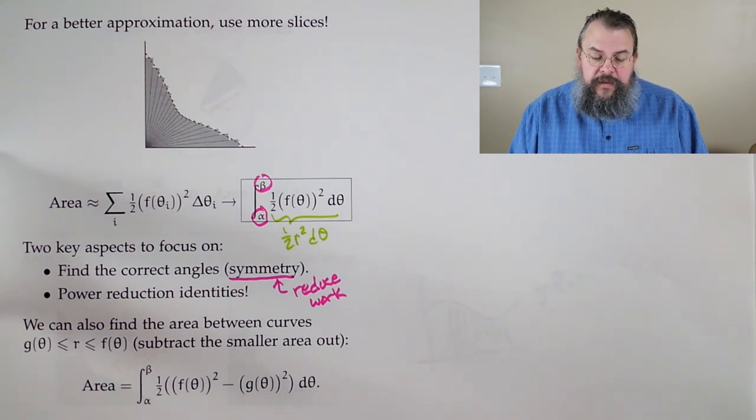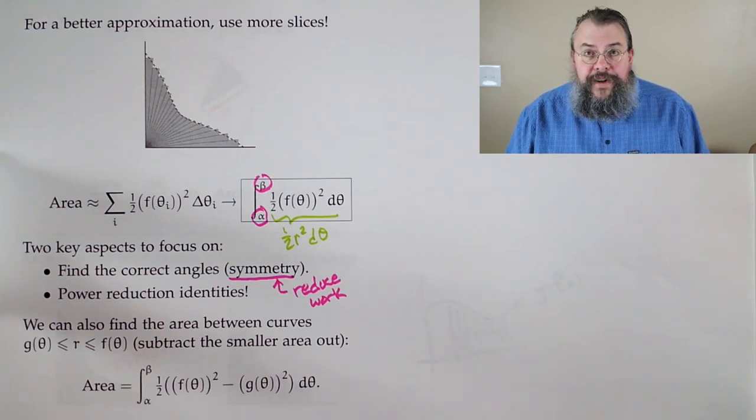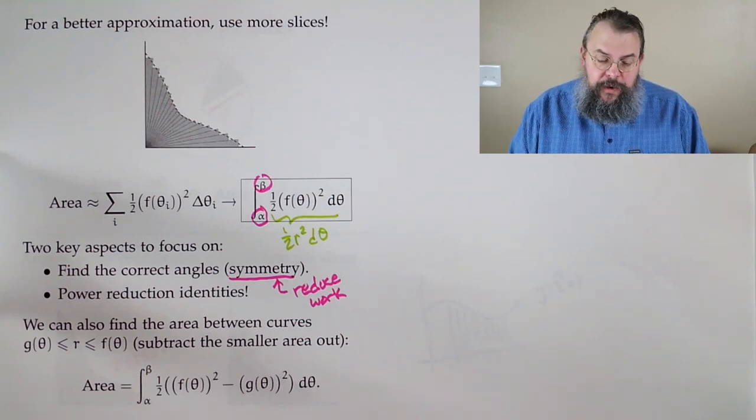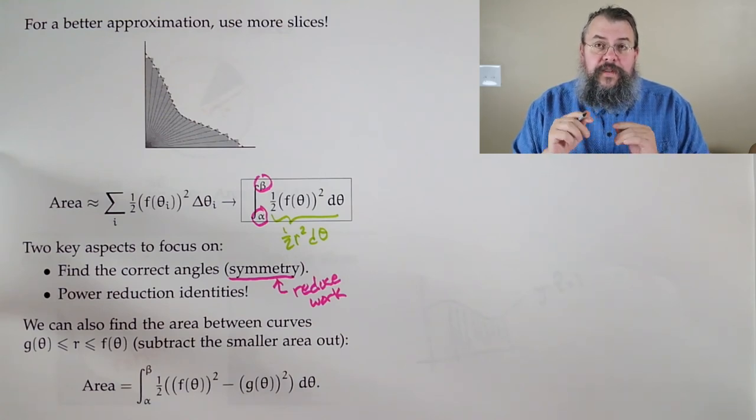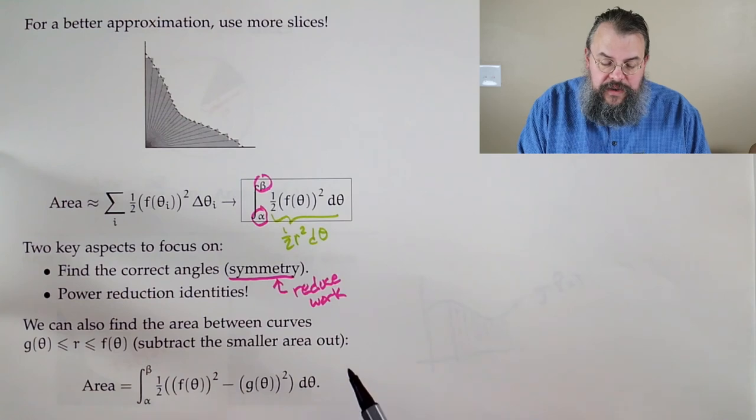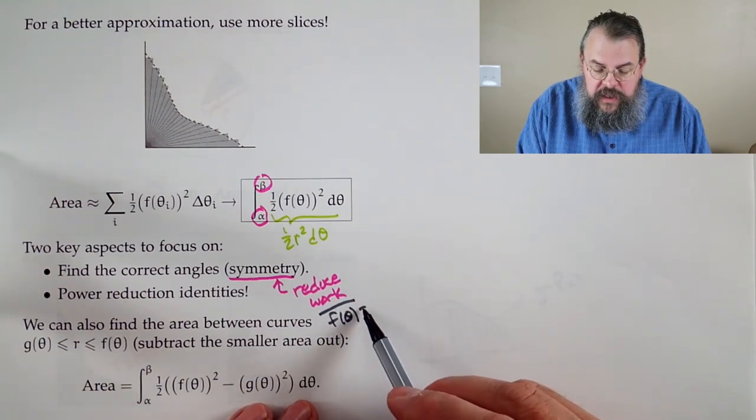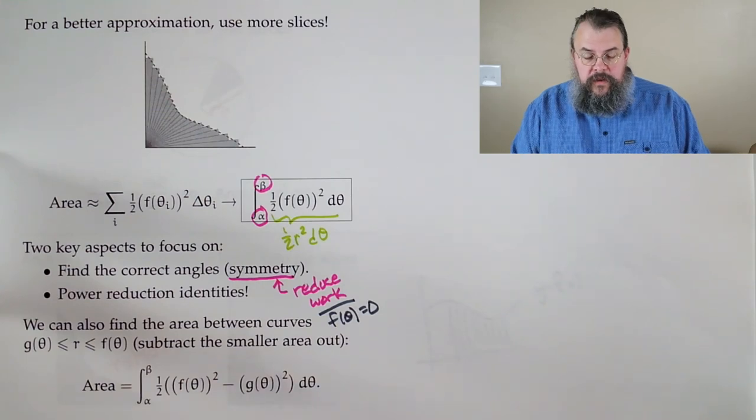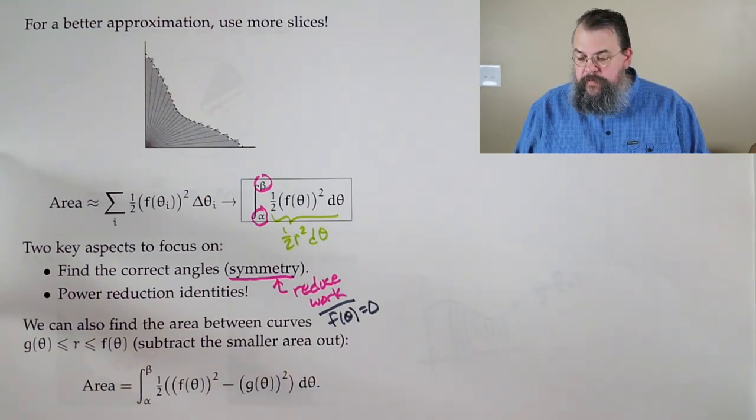Now, another thing to keep in mind is that when we talk about finding our angles. If, when in doubt, what should you do? Well, oftentimes, you're going to cue off of, when do you hit the center? So, in other words, another thing to look for is when does your function equal zero. So, that can help you figure out what the right angles to use are.